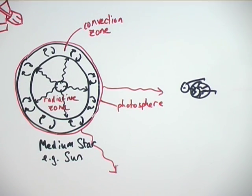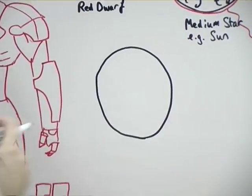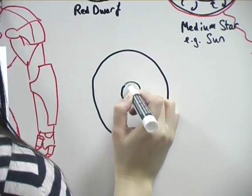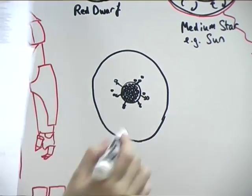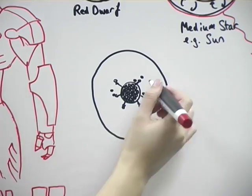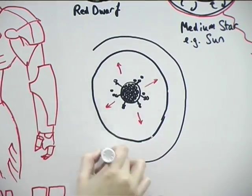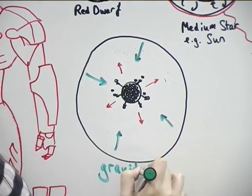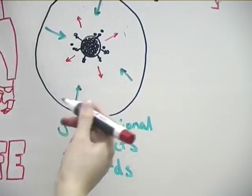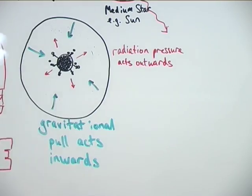The energy that travels from the core to the star's surface gives surrounding atoms more kinetic energy. The atoms start moving away from the star's center, causing the star to expand and creating an outward radiation pressure. This acts against the pull of gravity, and for most of the star's life, the two are balanced. The star lives like this for millions or billions of years, depending on its size.